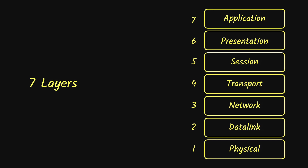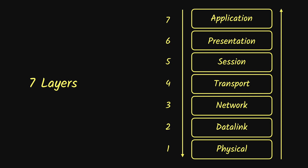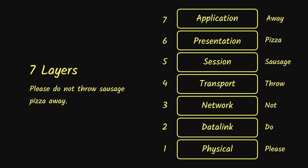When a sender or some application sends a message, it travels from the application layer all the way down to the physical layer on the sender's end. On the receiver's end, it enters from the physical layer and travels all the way up to the application layer before it reaches the receiver. One way to remember the names of the layers is by using the sentence: 'Please Do Not Throw Sausage Pizza Away.'